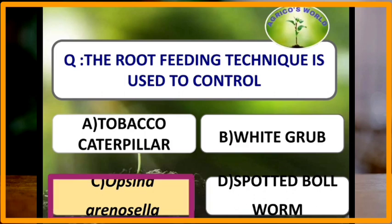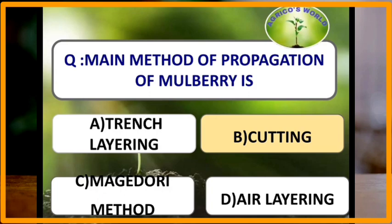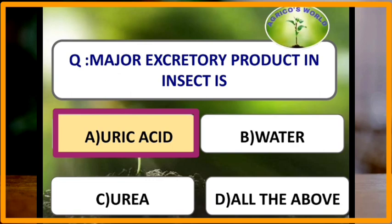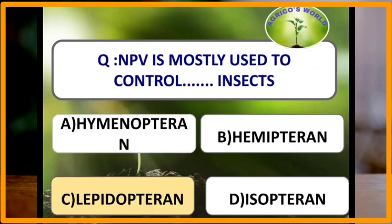The main method of propagation of mulberry is by cutting. Cutting is the main method of propagation of mulberry plants. The major excretory product in insects is uric acid. Uric acid is the major excretory product in insects.